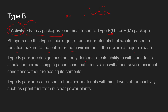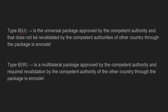Type B packages must not only demonstrate ability to withstand tests simulating normal shipping conditions, but also must withstand severe accident conditions without releasing their contents. Type B packages are used to transport materials with high levels of radioactivity, such as spent fuel from nuclear power plants. Type BU (Universal) is approved by the competent authority and does not need re-approval by other countries, while Type BM (Multilateral) requires approval by the competent authority of each country through which the package is routed.